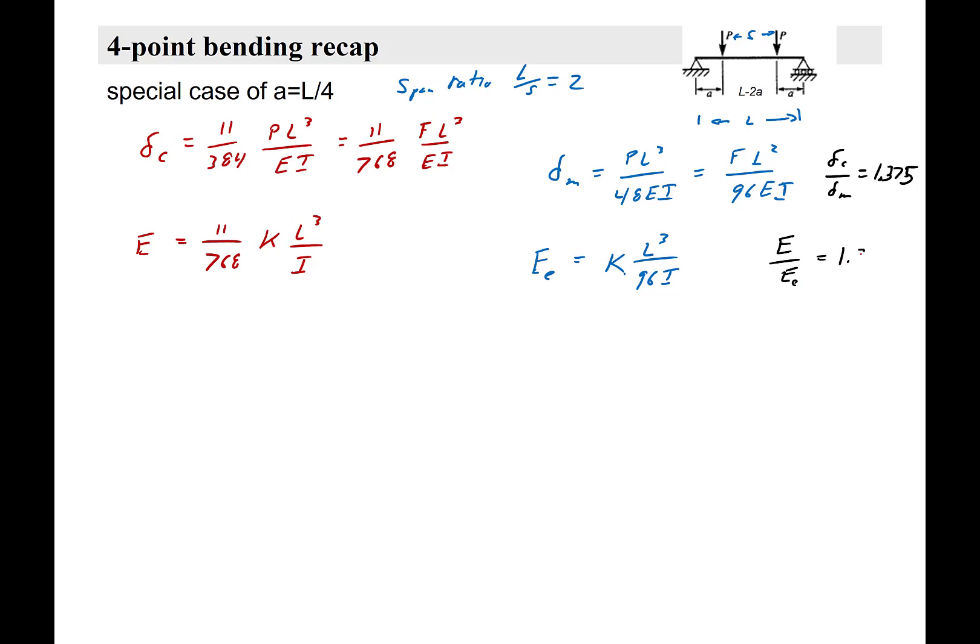You'll see the theme here is that if the machine is using to calculate the modulus, thinking it's getting deflectometer strain, it's going to overestimate what the Young's modulus is by 1.375. So you have to take the number you get out of the machine and divide by 1.375.